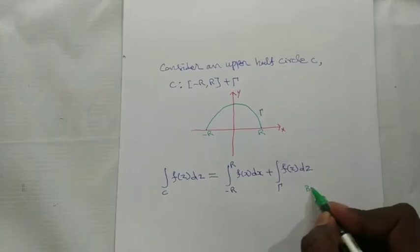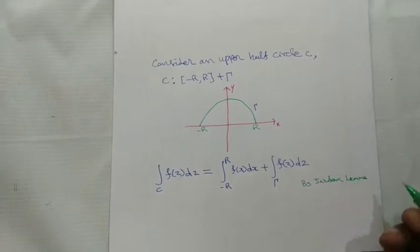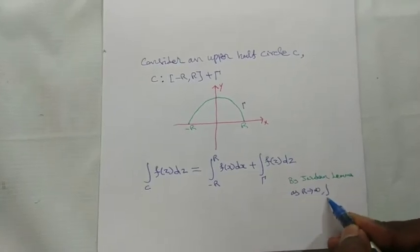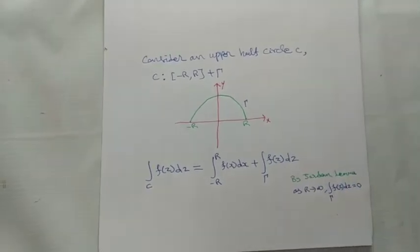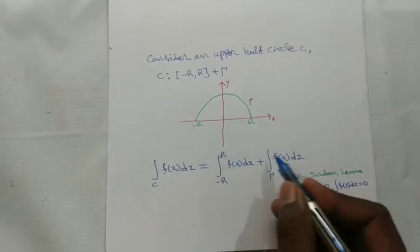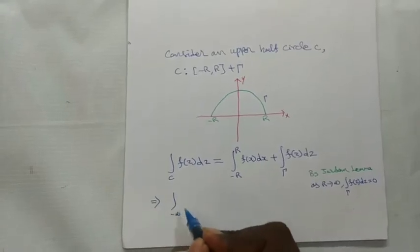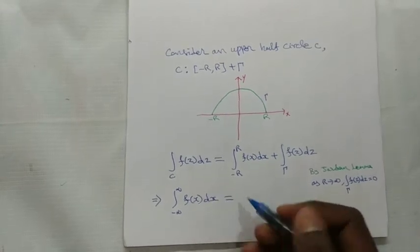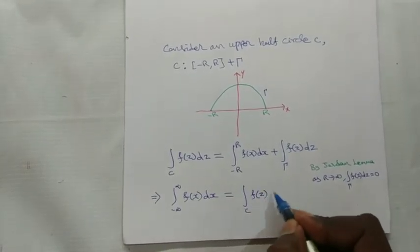By Jordan's Lemma, as R tends to infinity, the integral over gamma of f(z) dz equals 0. Substituting, as R tends to infinity, the integral over gamma vanishes, so the integral from minus infinity to plus infinity of f(x) dx equals the integral over C of f(z) dz.